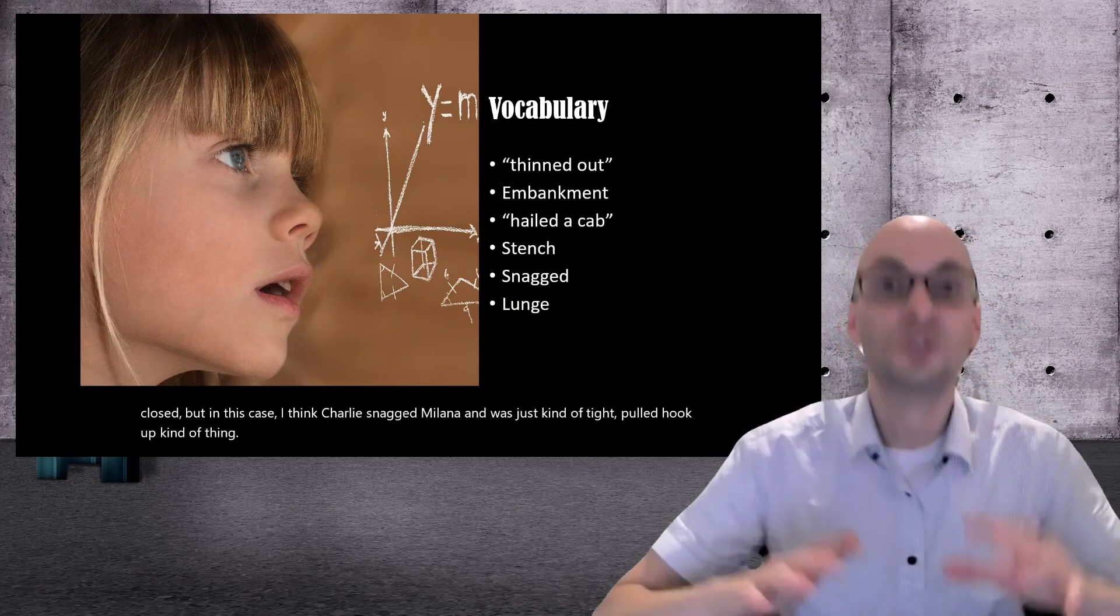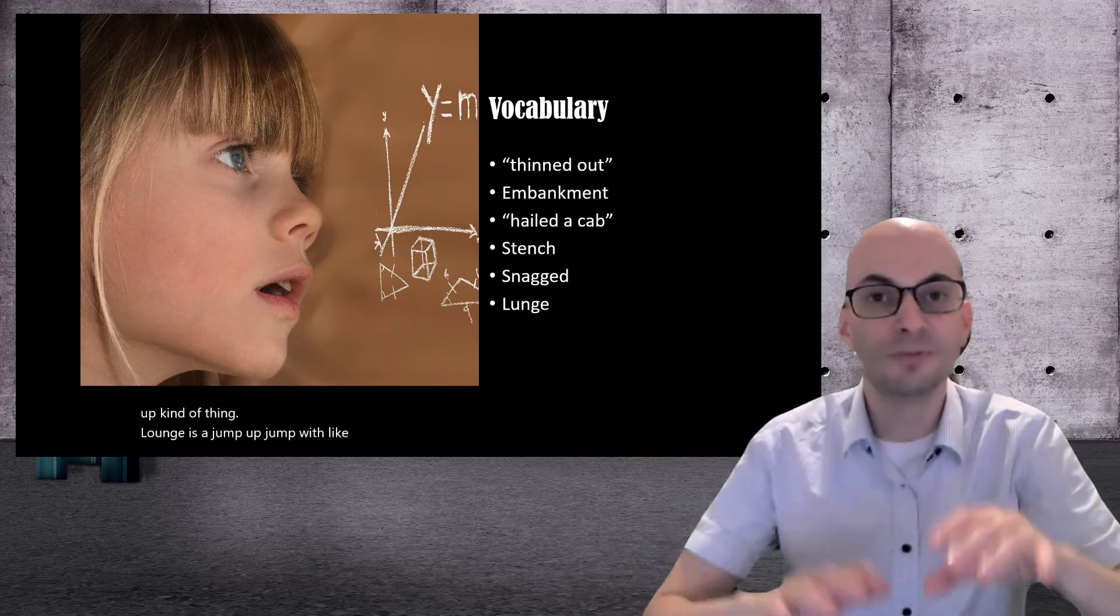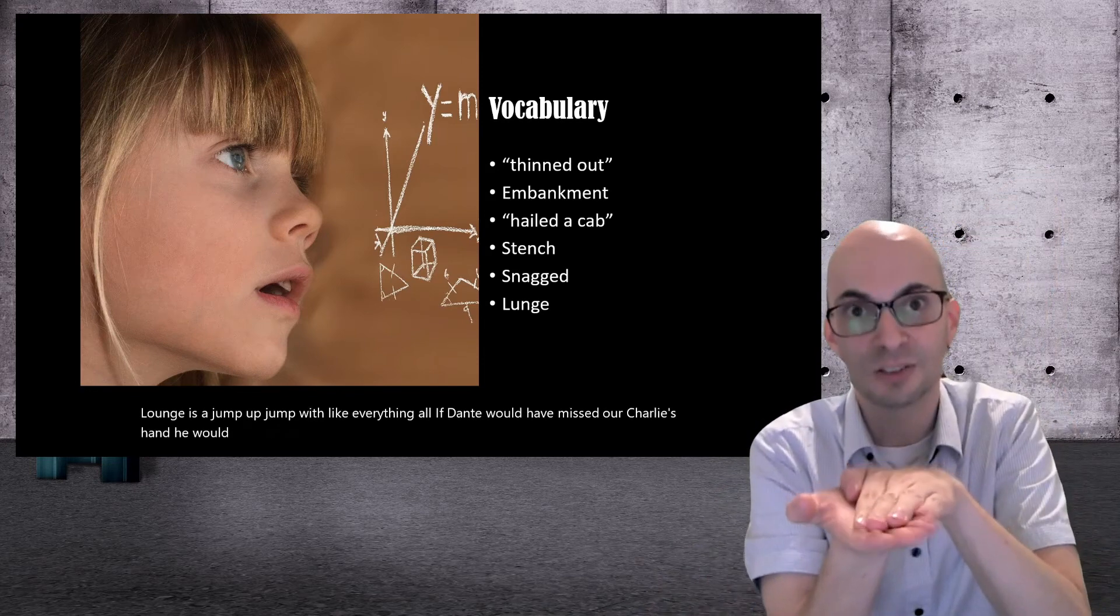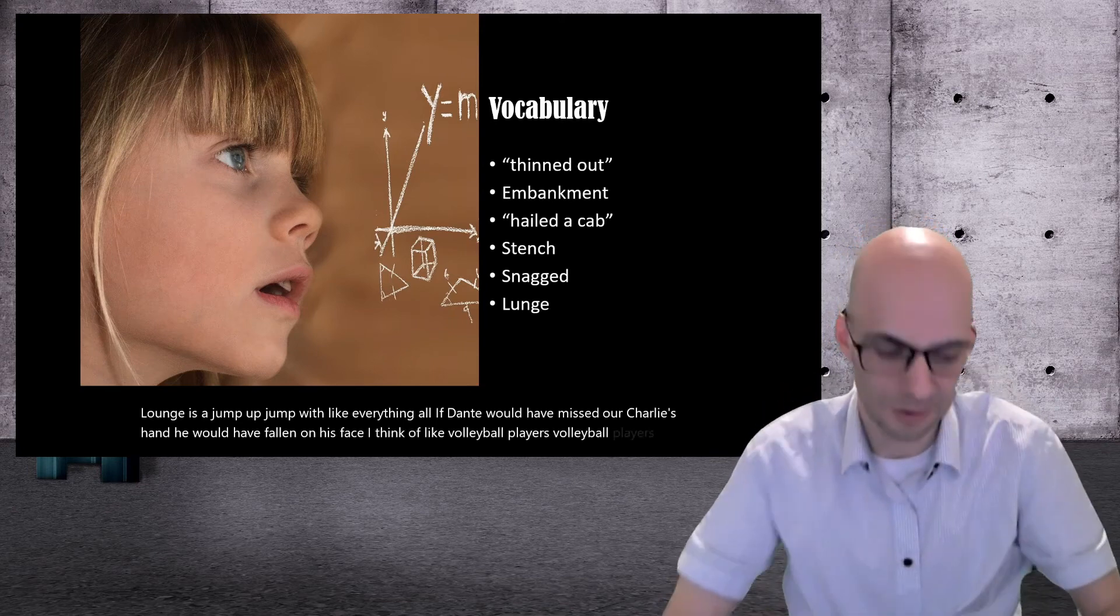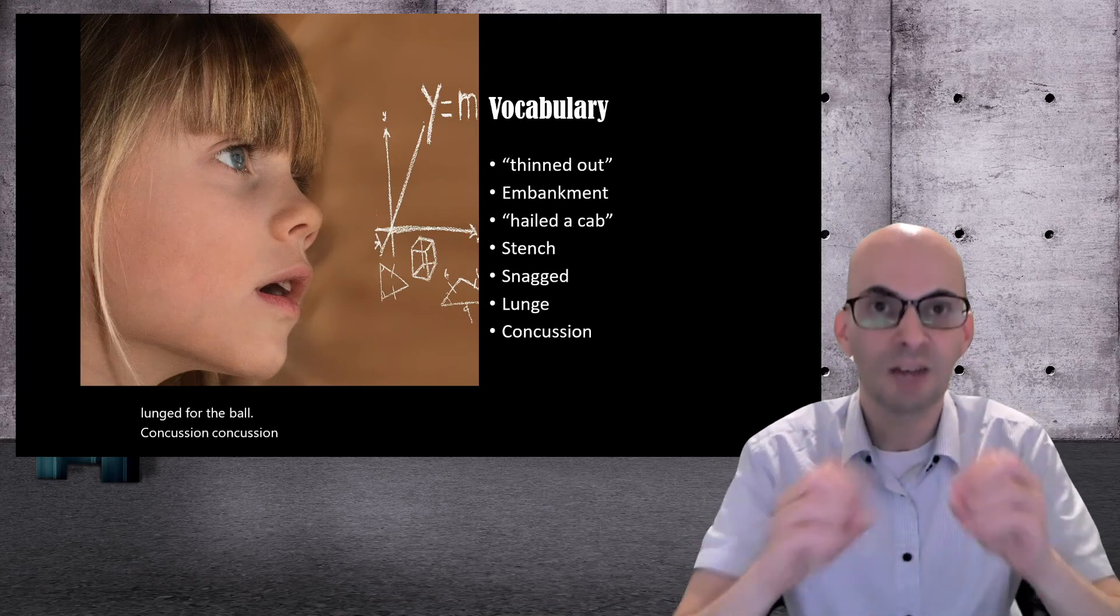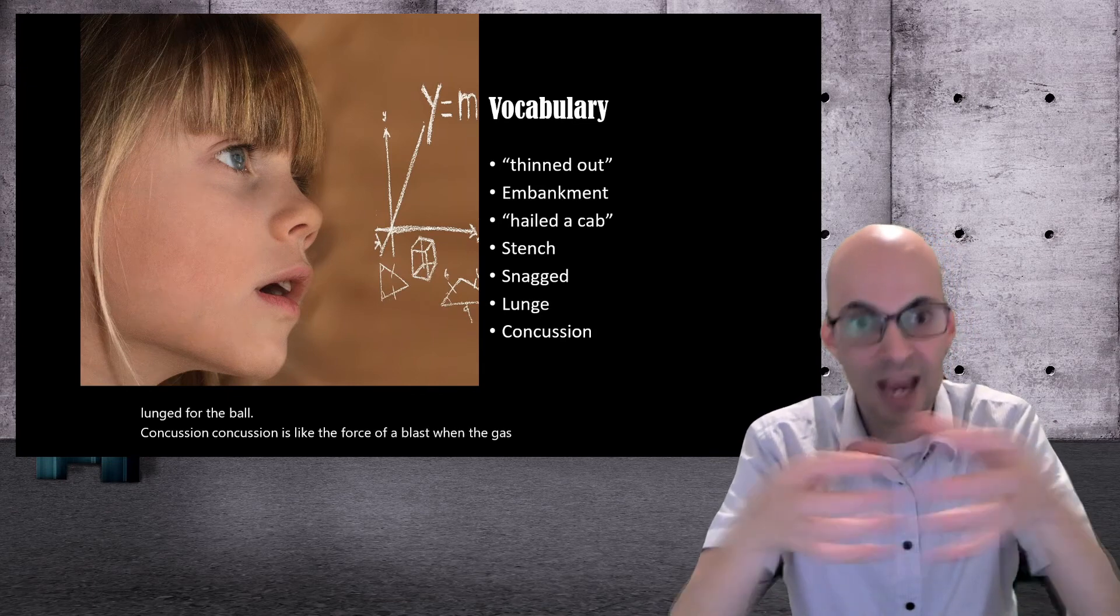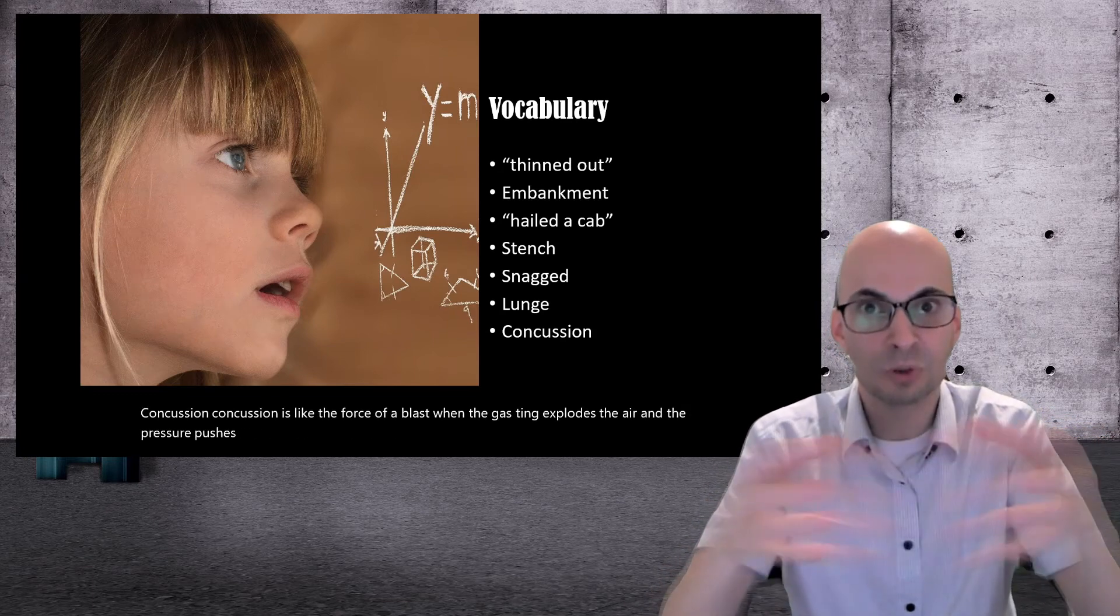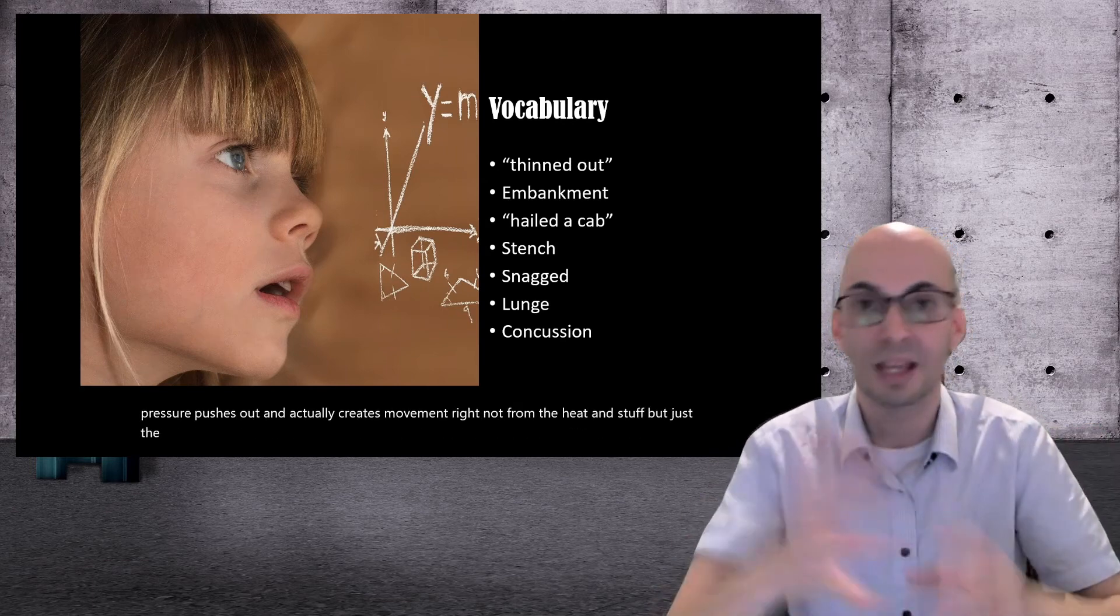Lunge is a jump with like everything. Oh, if Dante would have missed Charlie's hand, he would have fallen on his face. I think of like volleyball players, volleyball players lunge for the ball. Concussion, concussion is like the force of a blast. When the gas thing explodes, the air and the pressure pushes out and actually creates movement, right? Not from the heat and stuff, but just the explosion, the expansion. And that's a concussion.